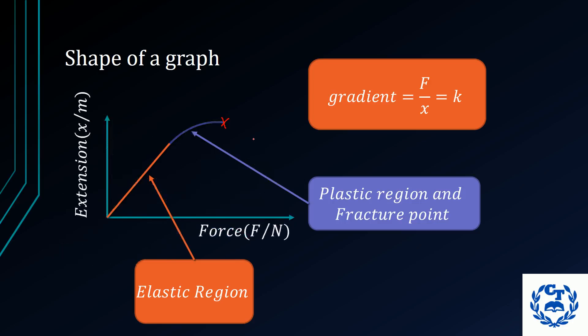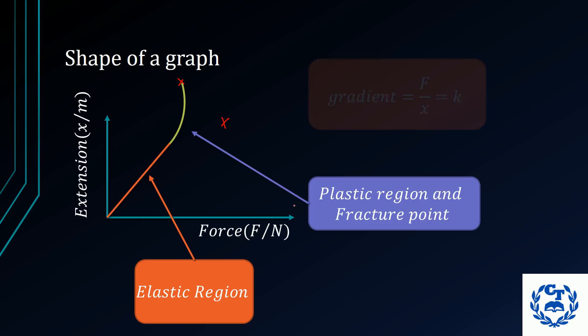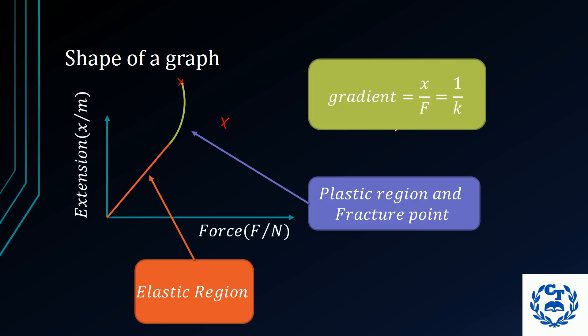If you were to plot extension against force, the curve would point in the other direction, and the fracture point would be at this location here. The gradient, however, would represent 1 upon k, since this region would be extension divided by force.